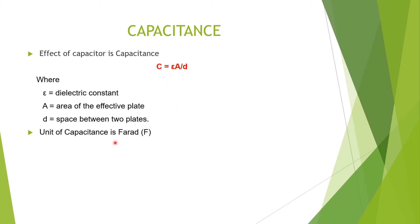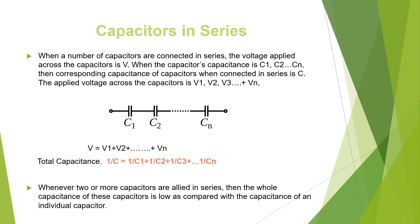The unit of capacitance is the farad. Now we are going to see what will be the equivalent capacitance when two or more capacitors are in series. Here you can see capacitors connected in series — C1, C2, up to Cn — and the resultant formula is: 1/C = 1/C1 + 1/C2 + 1/C3 + ... + 1/Cn. The reciprocal of the equivalent capacitance equals the sum of the reciprocals of the individual capacitances.